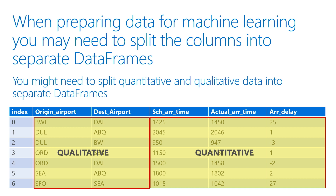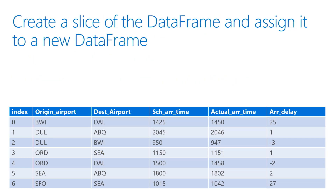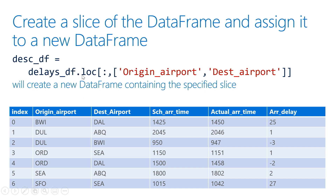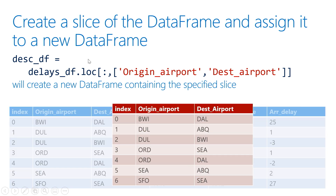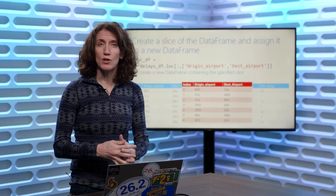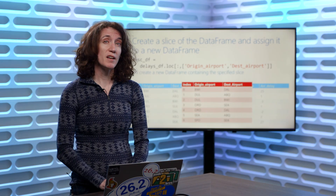In this case, that might be my origin airport and my destination airport. I can simply create a slice of that data frame — going back to what we talked about with how to query a data frame. Basically, I'm going to query the data frame to return just those two columns and put them in a new value. All you do is use loc — that first colon means return all rows, and then you specify which columns you want: origin airport and destination airport — and take those values and put them into a description data frame. That will create a nice new data frame with just the columns that I need. So these techniques are going to make it easier for you when you start preparing your data for data science. Now let's try doing it in code.